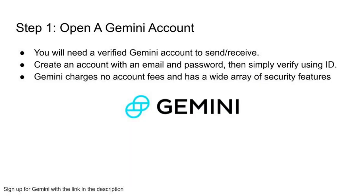The first step is to open a Gemini account. Gemini is a top platform in the cryptocurrency space — it's one of the few crypto platforms that hasn't been hacked due to its wide array of security features. You will need to create an account with an email and password, then verify your photo ID. In order to send or receive cryptocurrencies, you do need a fully verified Gemini account. You'll also add your phone number to set up two-factor authentication.